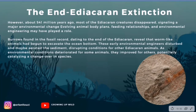Burrows found in the fossil record dating to the end of the Ediacaran revealed that worm-like animals had begun to excavate the ocean bottom. These early environmental engineers disturbed and aerated the sediment, disrupting conditions for other Ediacaran animals. As environmental conditions deteriorated for some animals, they improved for others, potentially catalyzing a changeover in species.